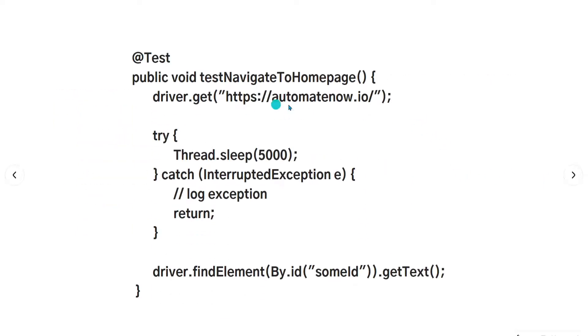This is the same test that we saw before, except that in this case we're not declaring that it throws an InterruptedException. Instead, we're using a try-catch block in order to handle the exception in case it occurs.